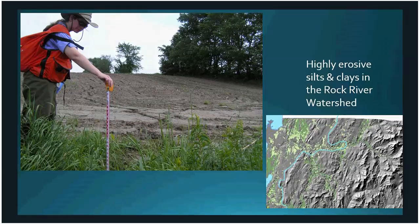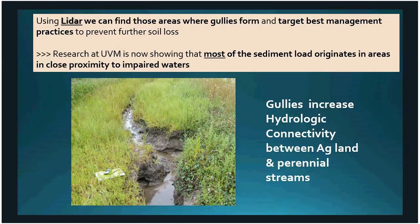Researchers are finding that most sediment load originates in areas in close proximity to rivers and streams. Up in the Rock River watershed — you might cross it on I-89 going to Montreal without noticing it — there's significant erosion on display. The soil map shows lighter green for silt soils and darker green for heavier clays, and LiDAR is a great tool for finding these areas prone to erosion and gully formation.